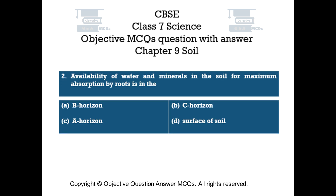Question number 2. Availability of water and minerals in the soil for maximum absorption by roots is in which horizon? Option A: B Horizon. Option B: C Horizon. Option C: A Horizon. Option D: Surface of soil.